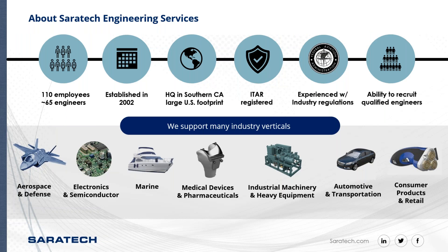Now let's get into Saratech engineering services. Saratech is an engineering firm — we have over 110 employees and 65 engineers, most with master's engineering degrees. We were established in 2002. We sell software but we also use it for our own engineering. We're headquartered in California, though about half our staff is scattered throughout the United States. We are ITAR compliant and do annual virtual training with the team in Washington DC. We have experience with industrial regulations and FAA certifications, working with a lot of aerospace and automotive industries.